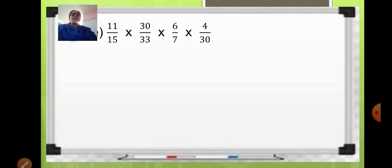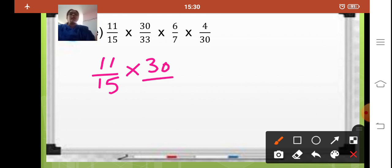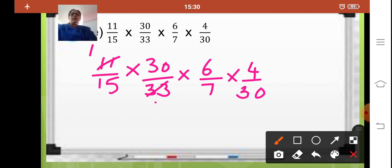Coming to the second sum. Here there are 4 fractions to be multiplied together: 11 upon 15 multiplied by 30 upon 33 multiplied by 6 upon 7 multiplied by 4 upon 30. Now 11 and 33 — 33 is easily divisible by 11, so you can just cancel this. 11 ones are 11, 11 threes are 33.